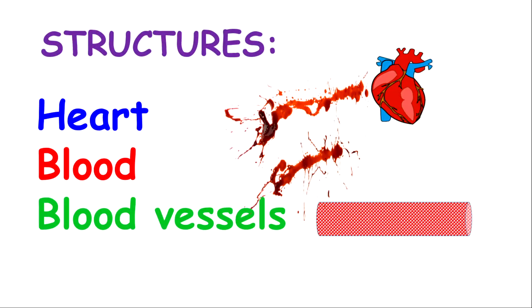First, I want you to note that the circulatory system pretty much involves three main structures: the heart, the blood, and blood vessels.